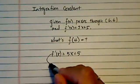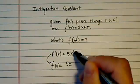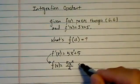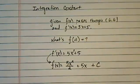So from here, we know that the function itself is equal to 5x squared over 2 plus 5x plus a constant, I'll call it c.